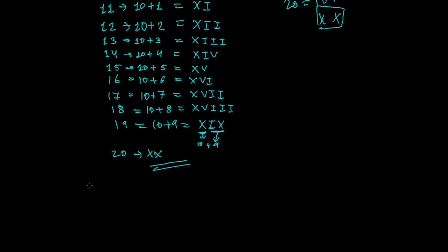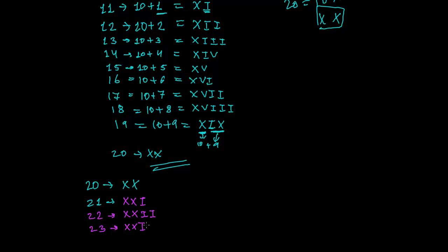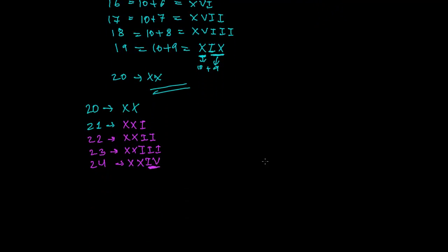For numbers above 20, we follow the same process. 20 is XX. For 21, we add I after XX to get XXI. For 22, we add two I's: XXII. For 23, we add three I's: XXIII. For 24, since we cannot write four I's, we use IV for 4, giving XXIV.